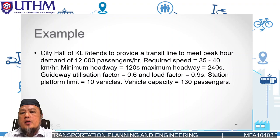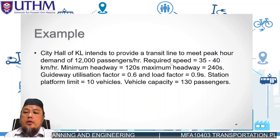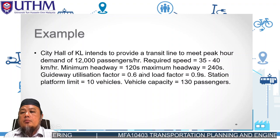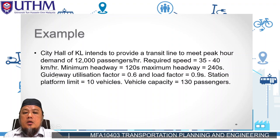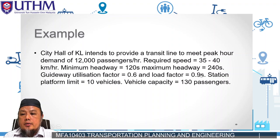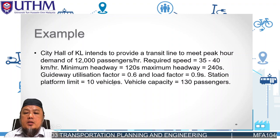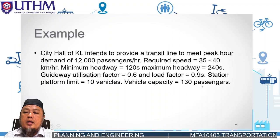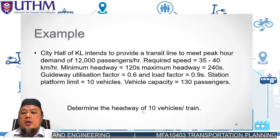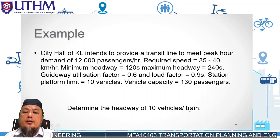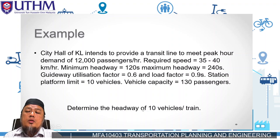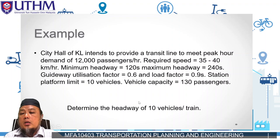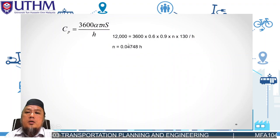Now let's look at an example. The city hall of Kuala Lumpur intends to provide a transit line to meet a peak hour demand of 12,000 passengers per hour, requiring a speed between 35 to 40 km/h. Minimum headway is 120 seconds, maximum headway is 240 seconds. The guideway utilization factor and load factor is 0.9. The station platform is limited to 10 vehicles, and vehicle capacity is 130 passengers. Determine the headway for 10 vehicles per train.